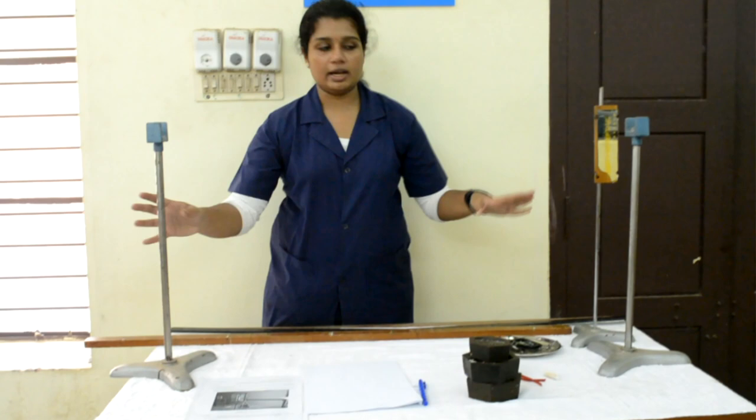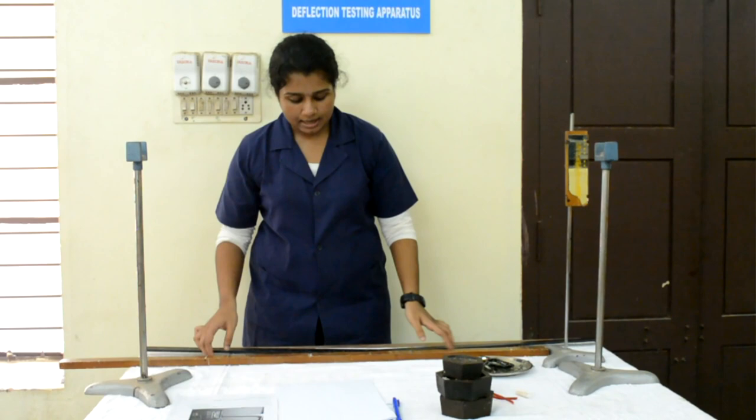So for that we need the loading pan, the weights, two knife-edge supports, a graduated scale, wooden specimen, and a measuring scale.